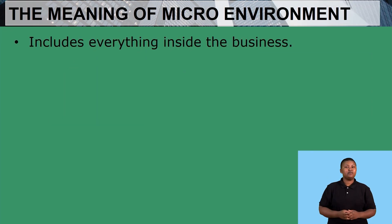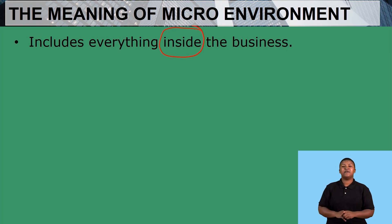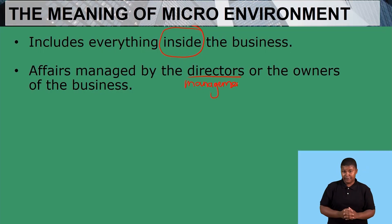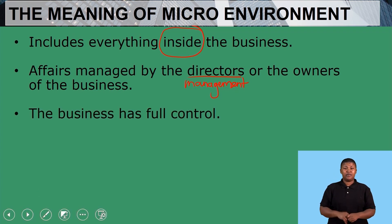The micro environment is the smallest environment — it's everything that happens inside the business. We also call it the internal environment, everything that happens within the four walls of the business. It's all the affairs managed by the directors, who are the management of a company. So all that happens in the micro environment can be managed by the managers, directors, or owners, and therefore we have full control over it.